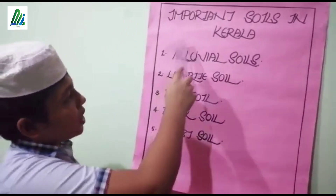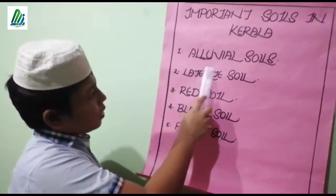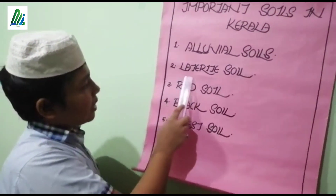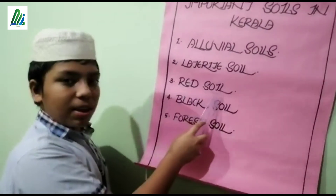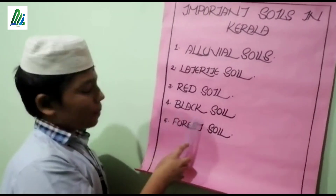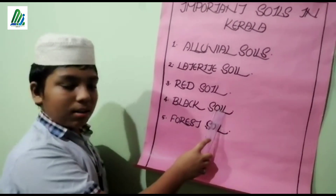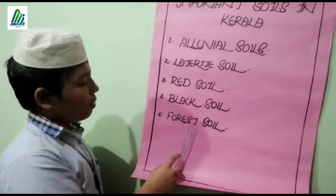The last type is mountain soil, which is dark brown or black in color and is very fertile. In Kerala, we can see different types of soil. The important soils in our state are: alluvial soil, red soil, laterite soil, black soil, and forest soil. Now we conclude our study — study very well. See you later, bye, thank you.